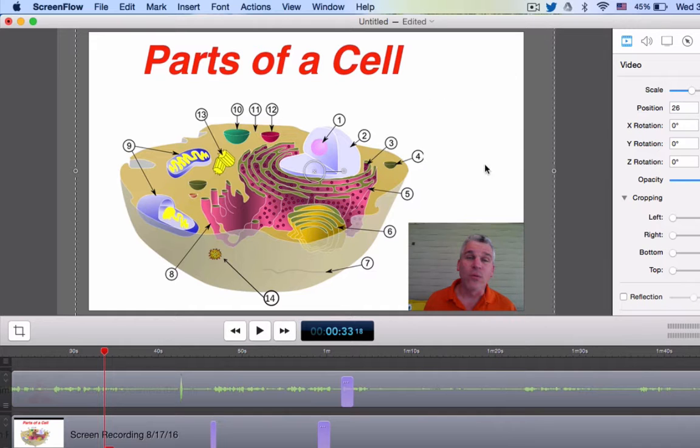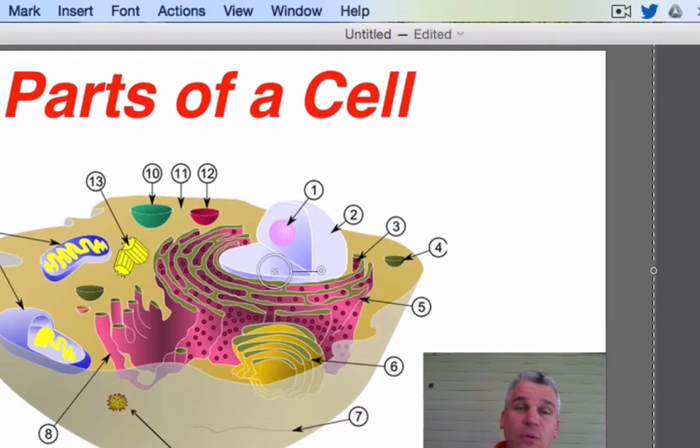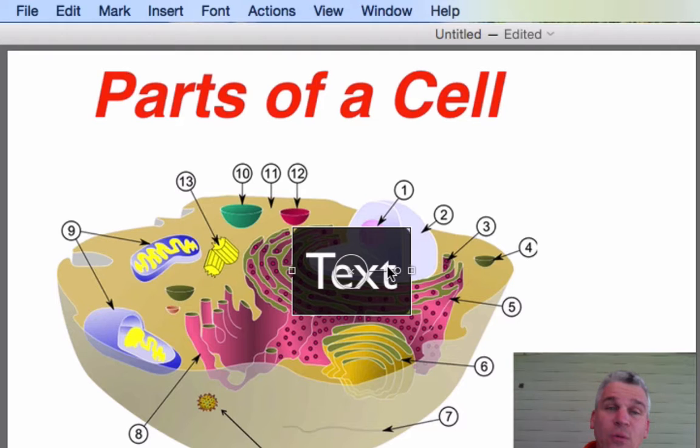So for instance, for this one, they are going to be expected to know all of these different organelles, and so I'm going to go over here to my text and hit a plus sign. And notice I get a text box that comes up.